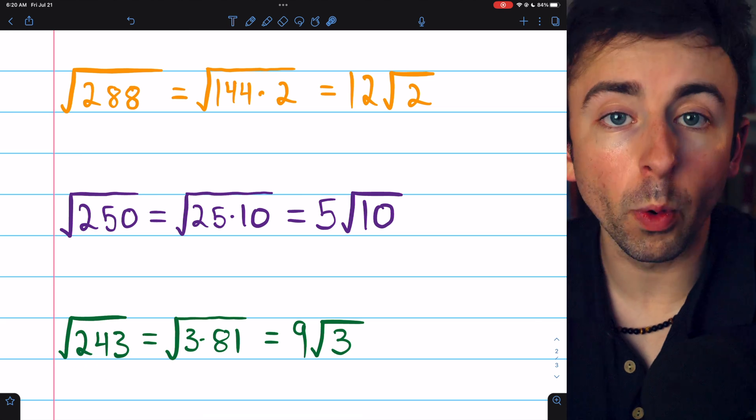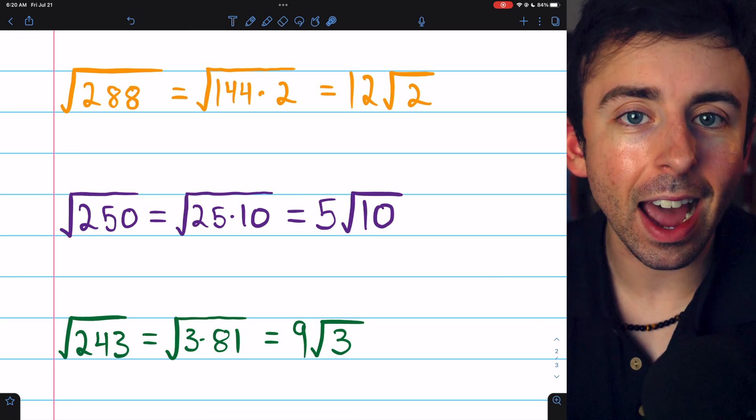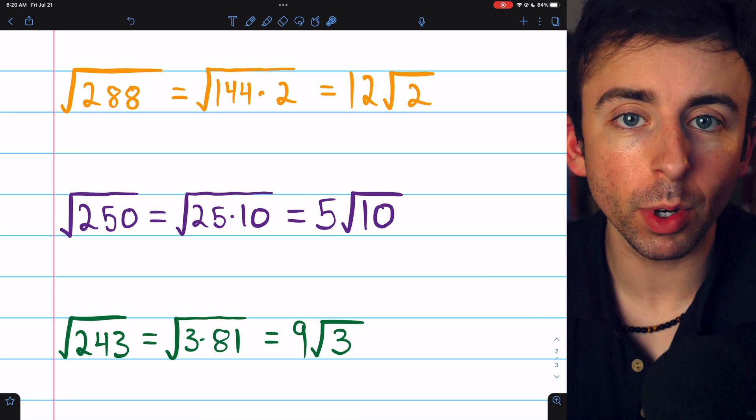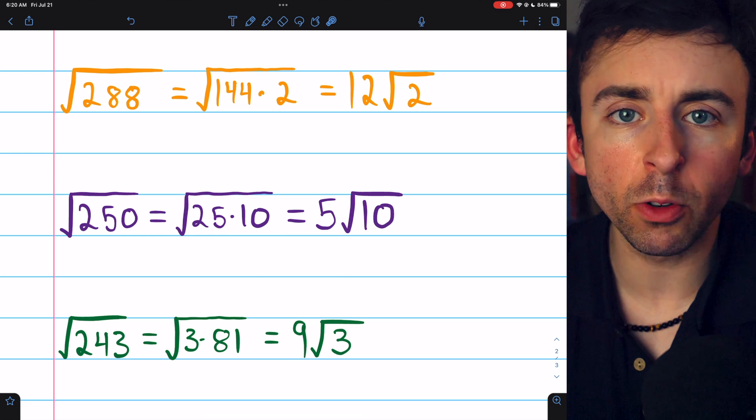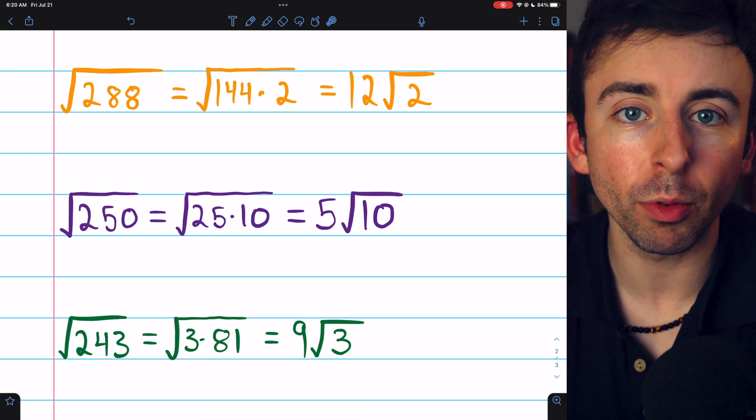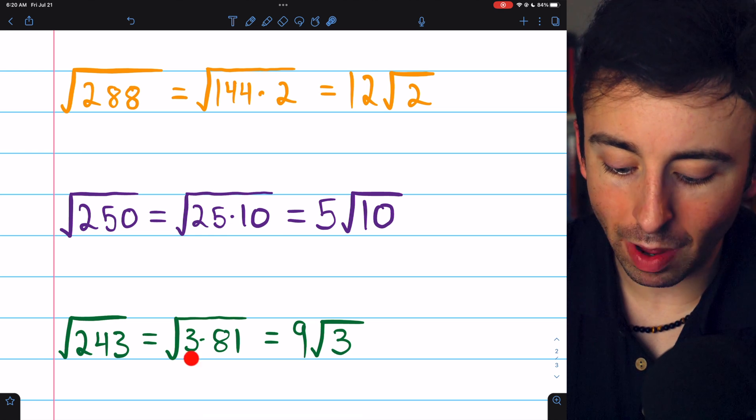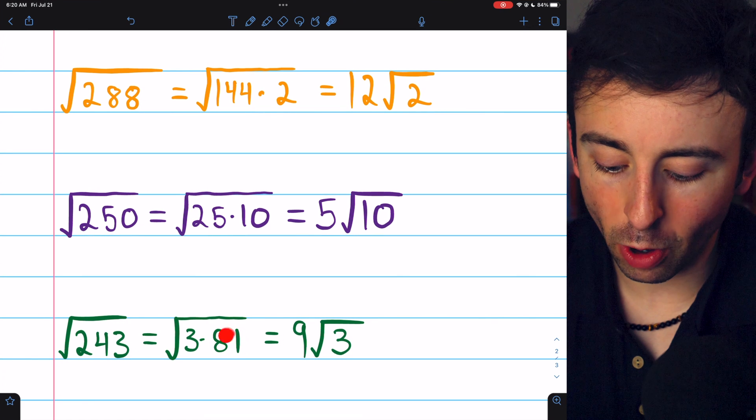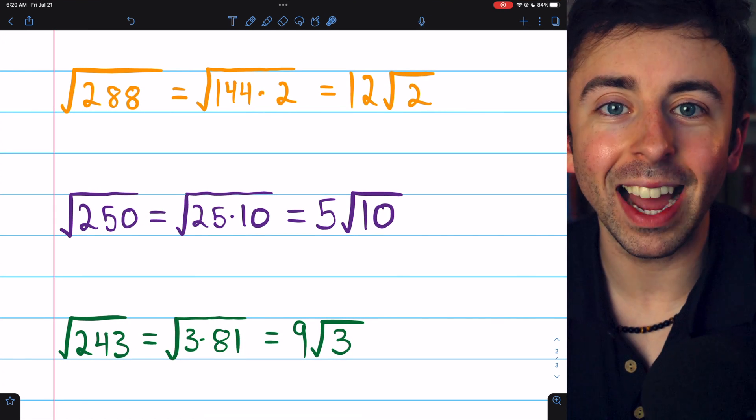250 ends in 0, so we knew we could take out a factor of 10. And the digits of 243 add up to 9, which is a multiple of 3, which means that 243 is divisible by 3. So we knew we could take out a factor of 3, which then showed us that 81 factor hiding inside.